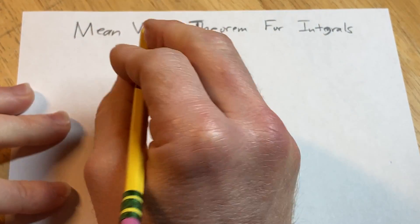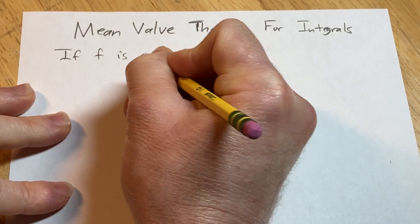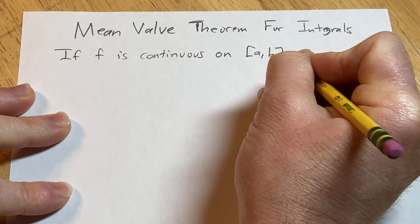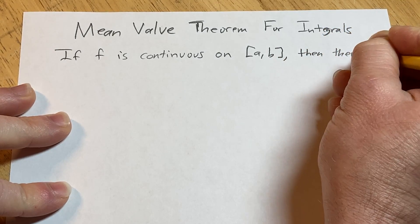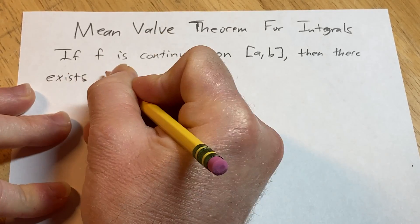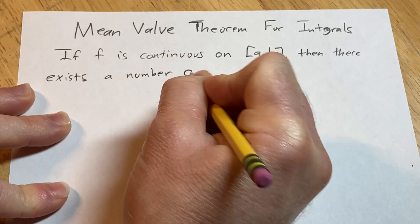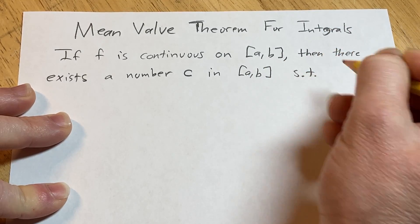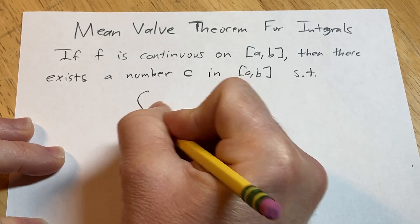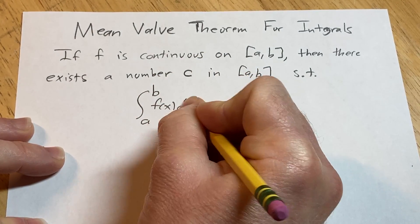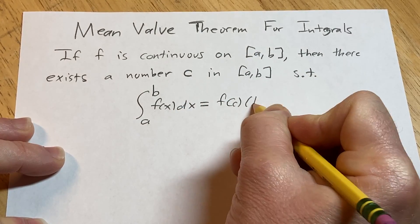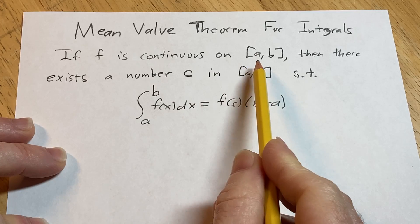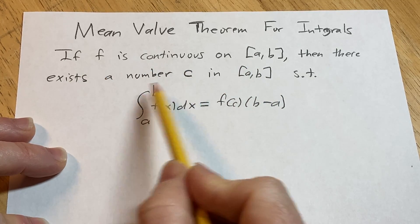The mean value theorem for integrals says: if f is continuous on the closed interval [a, b], then there exists a number c in the closed interval [a, b] such that the definite integral from a to b of f(x) dx is equal to f(c) times (b minus a). This is an existence theorem — it tells you that if you have a continuous function on a closed interval, then we can find some number c in the closed interval such that this equation is true.